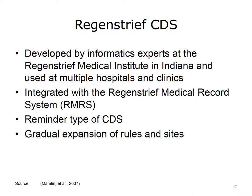The last system we will discuss is the Regenstrief Medical Records System, or RMRS. A good way to remember the focus of the early decision support here is to think of R for Regenstrief and reminders. The original intent of the developers in building the RMRS was to use the data in the system to develop decision aids — to remind physicians of things that they wanted to do but might forget. Over time, hundreds of rules were developed that could automatically review patient data and generate reminders, drug interaction alerts, and other types of clinical decision support. The number of hospitals and clinics using RMRS has expanded over the years, and this system is one of the models often pointed to for its sophistication. In the next presentation, we will look at how CDS systems have continued to evolve.